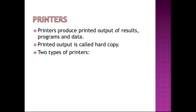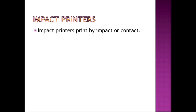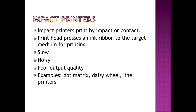Printers are classified into two categories: impact and non-impact. Impact printers print by getting in touch with the paper — that is why they are known as impact printers. The print head gets in touch with the target medium and presses an ink ribbon to it, causing printing to happen. These printers are slow, noisy, and produce poor quality output. We are going to study three impact printers: dot matrix, daisy wheel, and line printers.